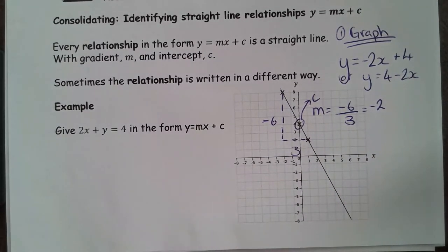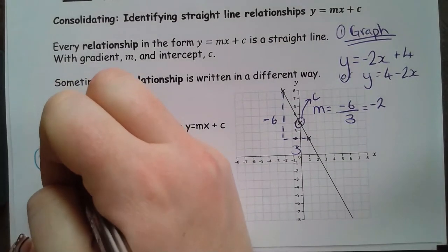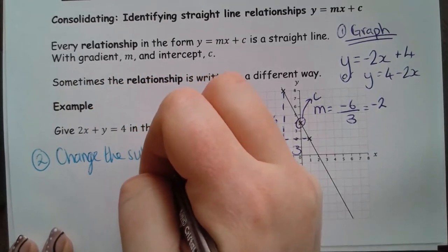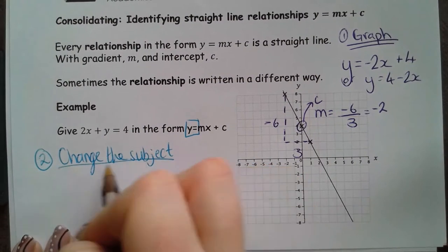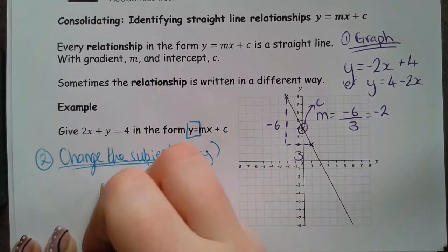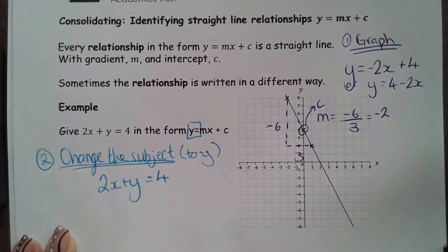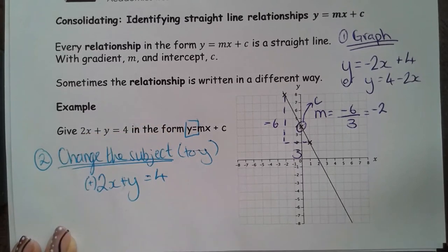The second method I can do is to change the subject. Method number 2 is to change the subject. Because actually, what I want is it to be y equals. That's what it means to change the subject. So, changing the subject to y means just altering and moving things around in this equation. So, if I want this y by itself, I need to get rid of this positive 2x.